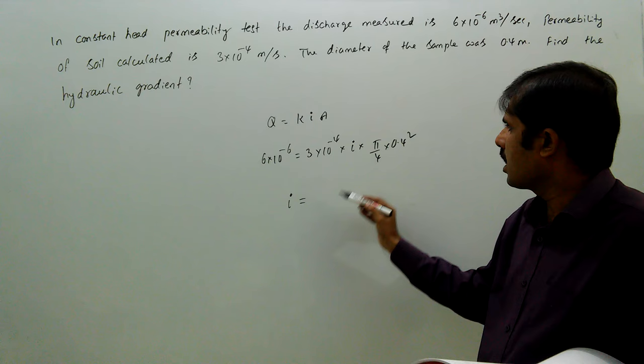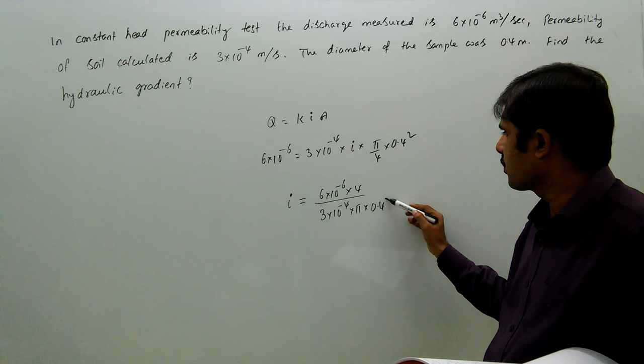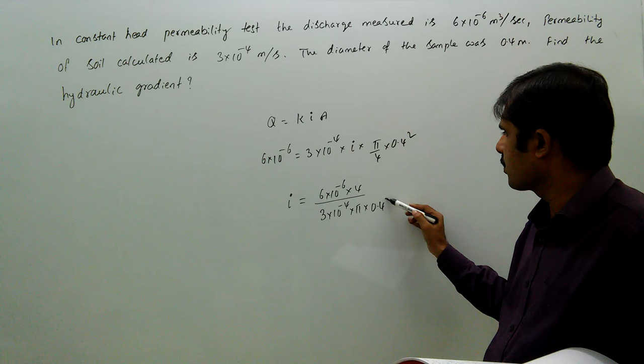So i equals 6 into 10 power minus 6 into 4, divided by 3 into 10 power minus 4 into π into 0.4 square.